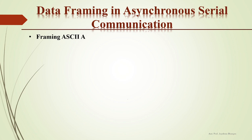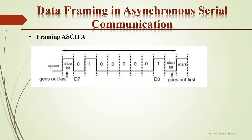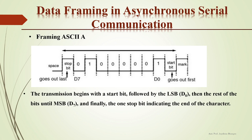Here, the framing of the ASCII character 'A' is shown in the figure. The data from D0 to D7 represents the ASCII character 'A', framed between one start bit and one stop bit. The start bit is always zero and the stop bit is always one. When there is no transmission, the line is held high — called a mark. Transmission begins with the start bit, followed by the LSB (D0), then the remaining bits up to the MSB, and finally the stop bit indicating the end of the character.